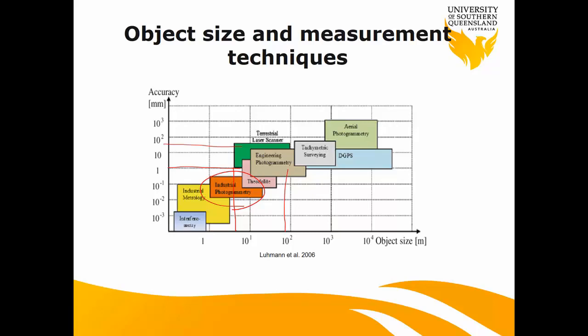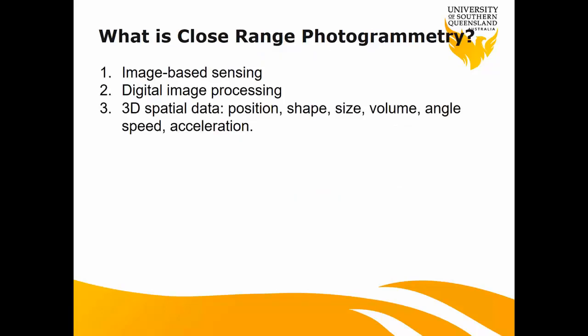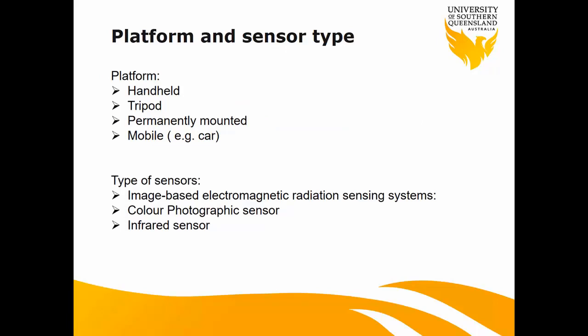We have different sensors — we can have infrared cameras, thermal cameras, digital or RGB images. We use close-range photogrammetry because we want to know about the position, shape, size, volume, angle, speed, and acceleration of an object. For platforms, most of them you know already — handheld, tripod, or permanently mounted. For example, now we know that total stations have a camera — they can take a picture.